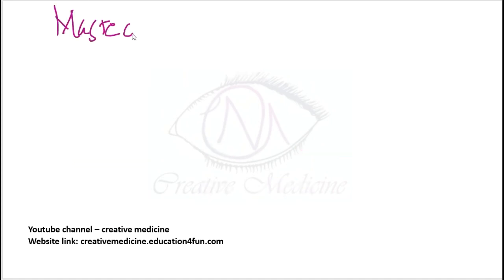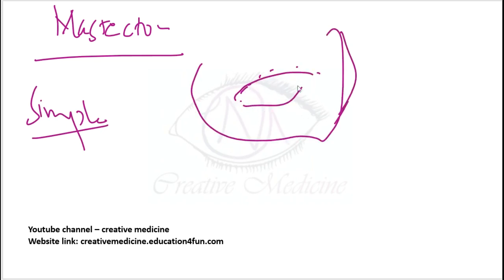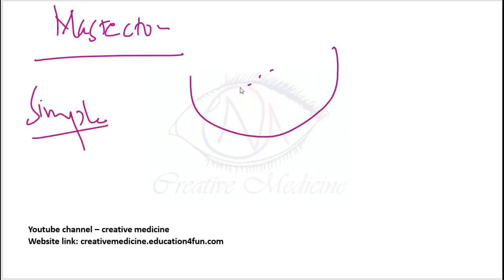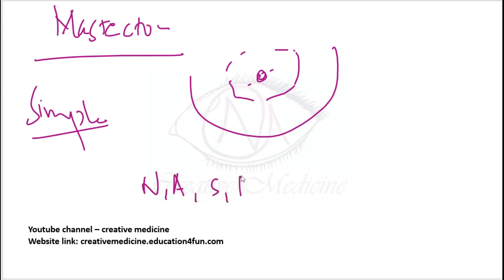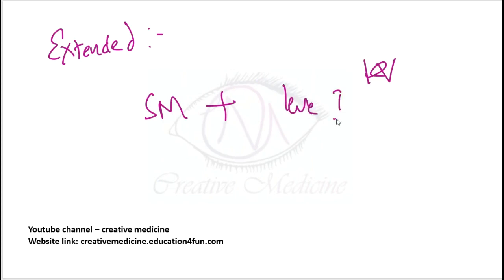In mastectomy, simple mastectomy involves an elliptical incision with en-bloc resection of nipple, areola, skin, breast tissue, and breast mass. In extended mastectomy, you perform simple mastectomy along with removal of level 1 lymph nodes.